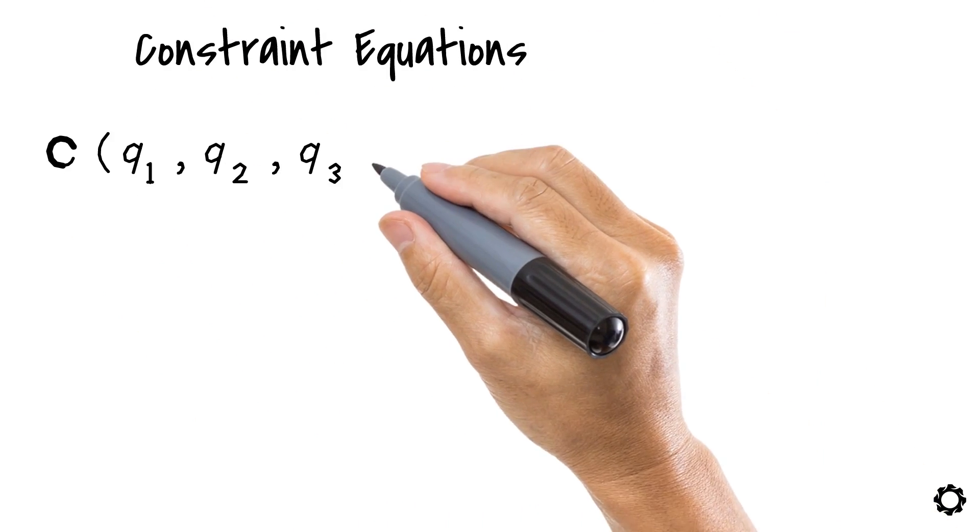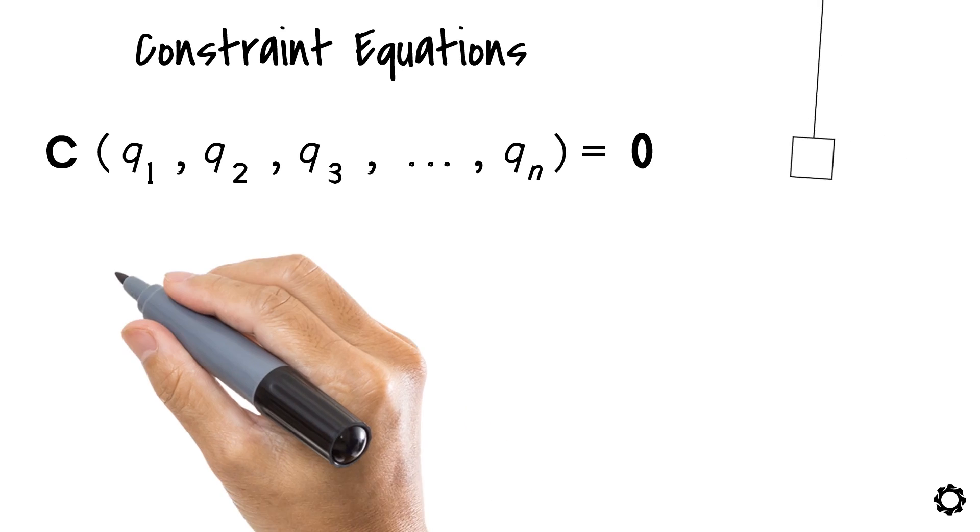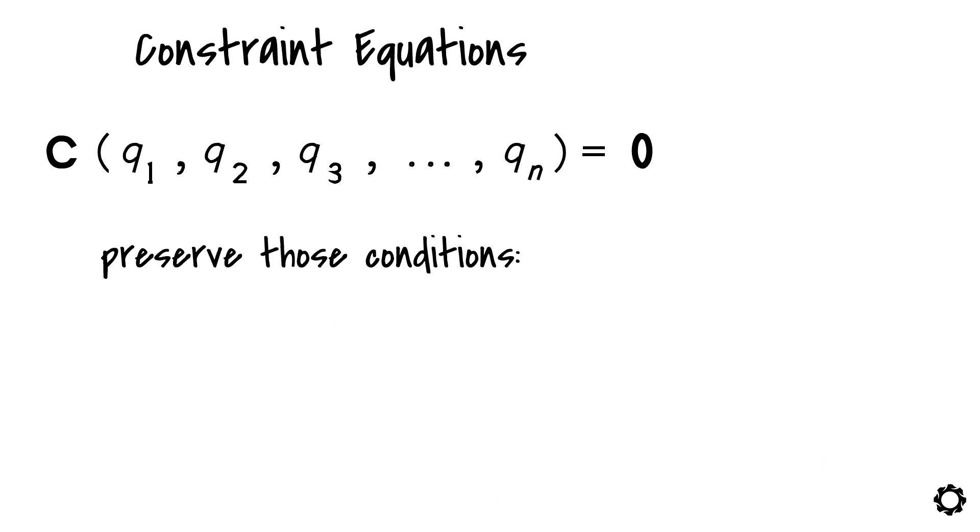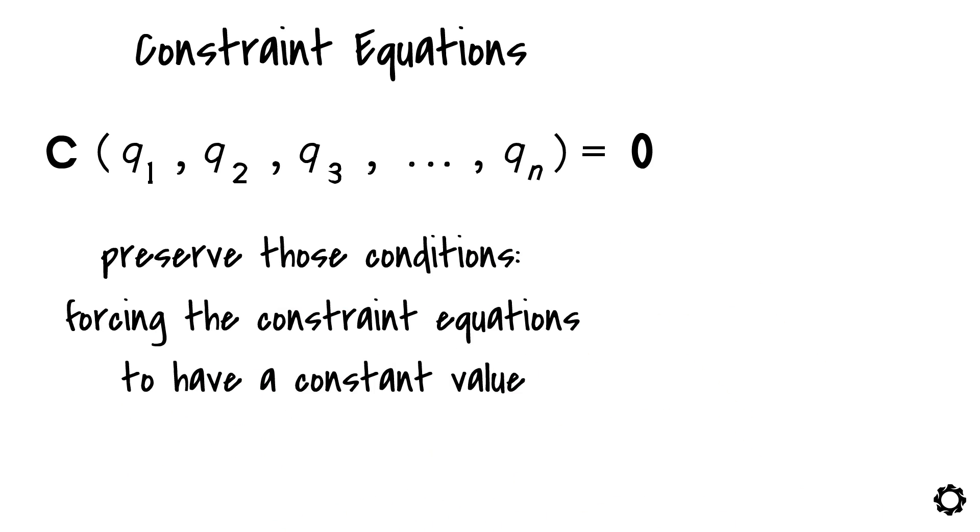Constraint equations are based on maintaining certain conditions, such as pure rotation of one body with respect to another, just to mention one. And one of the ways to mathematically say that we need to preserve those conditions is expressed by forcing the constraint equations to have a constant value. This time, it's zero, but it could be a different one depending on the job to be done. But let's get back to the main idea.